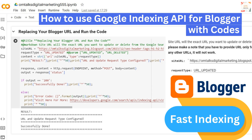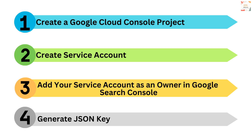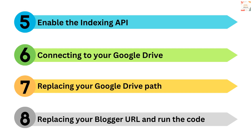There are 8 steps to do this. Step 1 is creating a Google API Cloud Console project. Step 2 is creating a service account. Step 3 is adding your service account as an owner in Google Search Console. Step 4 is generating a JSON key. Step 5 is enabling the Indexing API. Step 6 is connecting to your Google Drive. Step 7 is replacing your Google Drive path. Step 8 is replacing your post or page URL and running the code.